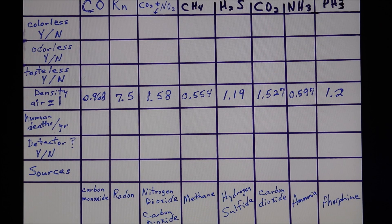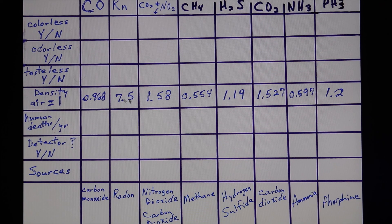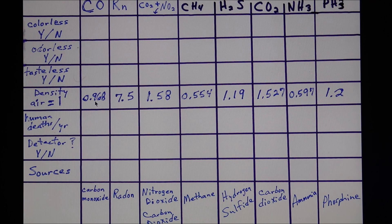I'm recording this early in 2017. The parameter filled out so far is density relative to air. If we say air is 1, numbers less than 1 mean lighter than air, and numbers greater than 1 mean heavier than air. Carbon monoxide is pretty much equal to air — slightly less dense. And then look at radon: 7.5.